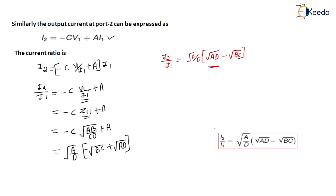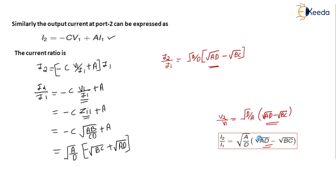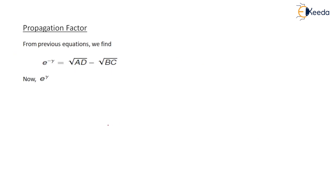If you observe both formulas, V2 by V1 equals root(D/A) times bracket root(AD) minus root(BC), and I2 by I1 equals root(A/D) times bracket root(AD) minus root(BC). In both equations, the term root(AD) minus root(BC) is common. This common term is represented as E raised to minus gamma, where gamma is the propagation constant. Our next aim is to calculate the value of the propagation constant, so we write E raised to minus gamma equal to root(AD) minus root(BC).